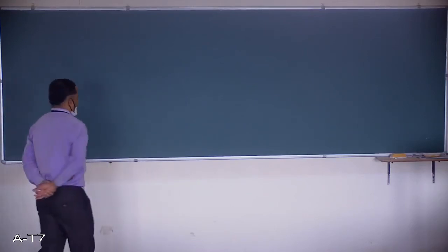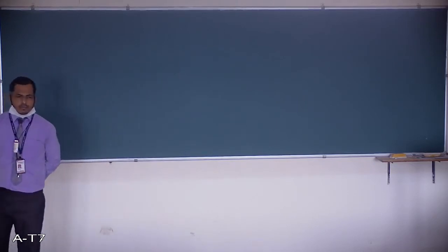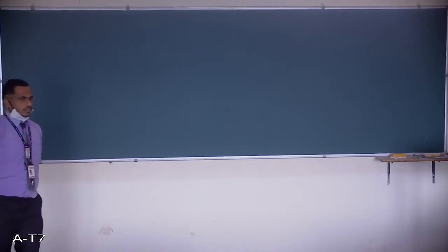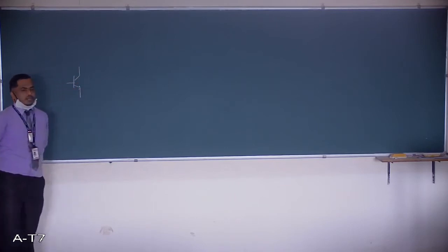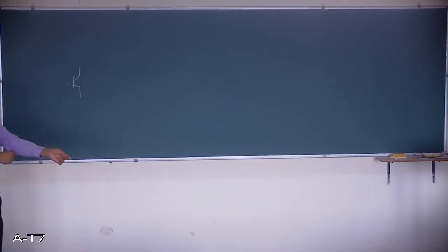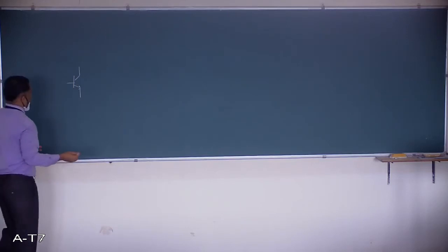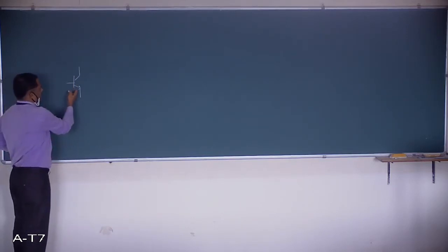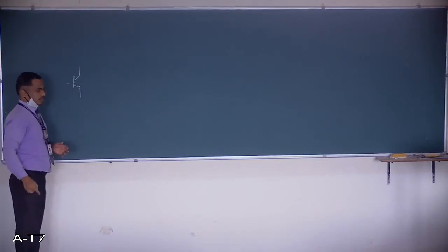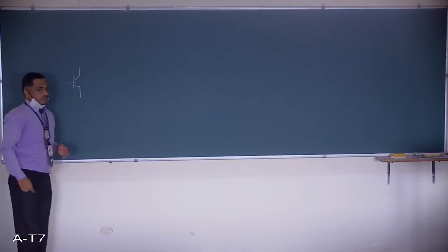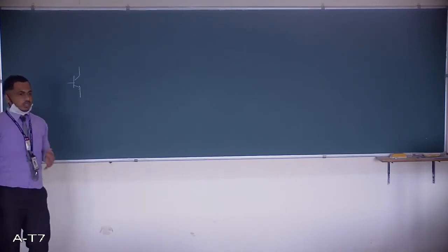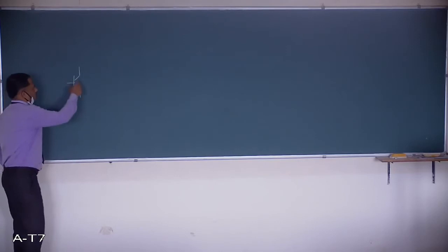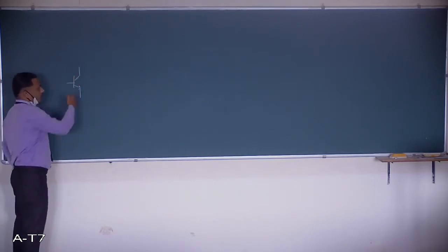Good morning students. In yesterday's class we discussed the basics of transistors and transistors being used as amplifiers. The necessary conditions are: the base-to-emitter PN junction should be forward biased, and the base-to-collector junction should be reverse biased, for the transistor to operate as an amplifier.